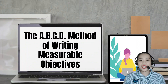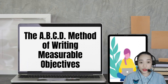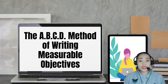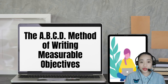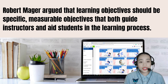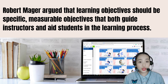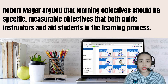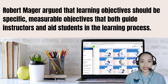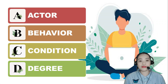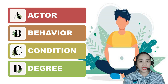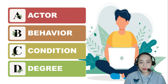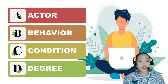Now let's talk about the ABCD method of writing measurable objectives. A well-written learning objective provides a clear picture of the performance you expect as a result of the lesson. Robert Mager argued that learning objectives should be specific, measurable objectives that both guide instructors and aid students in the learning process. Mager's ABCD model for learning objectives includes four elements: actor or audience, behavior, condition, and degree of mastery needed.